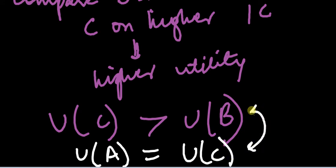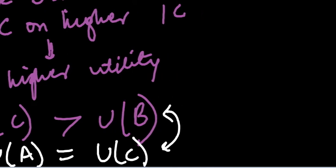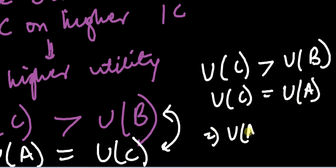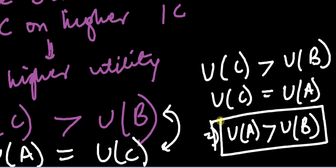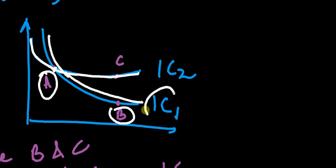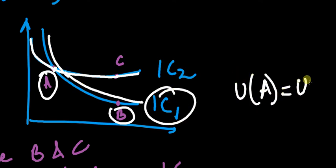Using these two results: utility of C is greater than utility of B, and utility of C equals utility of A — this implies utility of A is greater than utility of B. But A and B are also on the same indifference curve IC1, so utility from A should equal utility from B. This is a contradiction, which proves that two indifference curves cannot intersect.